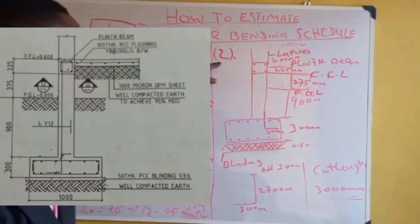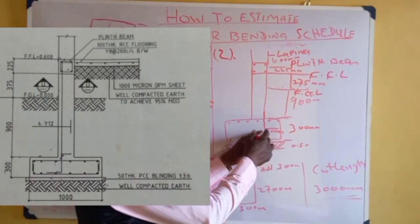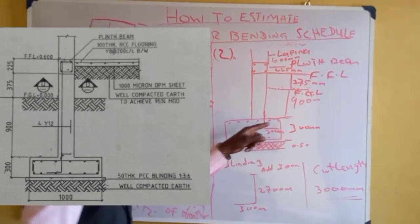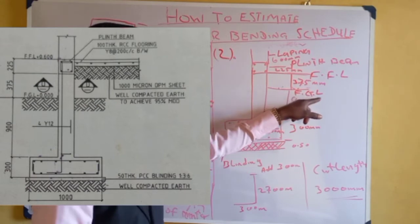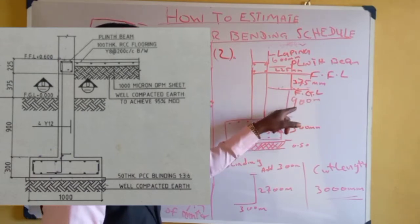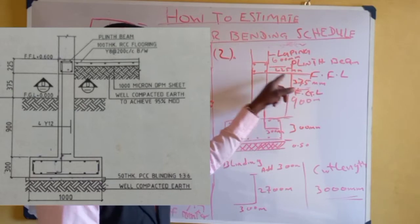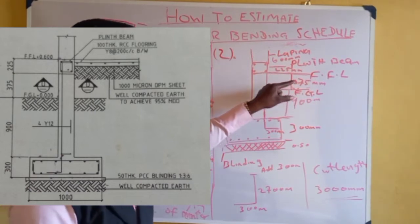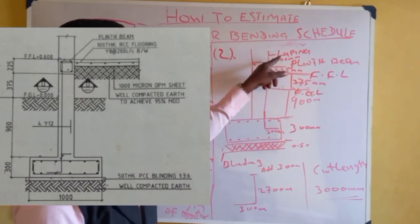For the column starter — number two — you are given a shape like this to estimate. The bend extension is 300mm from the base to this point. From here to the finishing ground level (FGL) is 900mm. From the finishing floor level up to the plate beam is 2,275mm, which is also the height of the block wall.